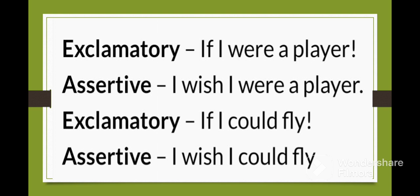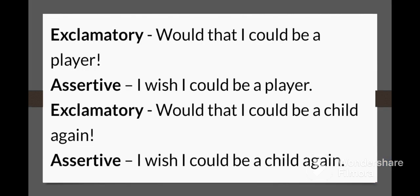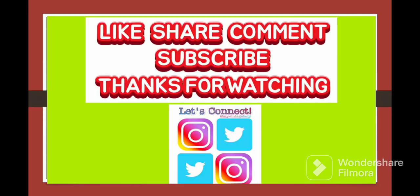Now let us see the examples. 'If I were a player' → 'I wish I were a player.' 'If I could fly' → 'I wish I could fly.' 'Had I the pairs of birds' → 'I wish I had the pairs of birds.' 'Had I been a king' → 'I wish I had been a king.' 'Would that I could be a player?' → 'I wish I could be a player.' 'Would that I could be a child again?' → 'I wish I could be a child again.'